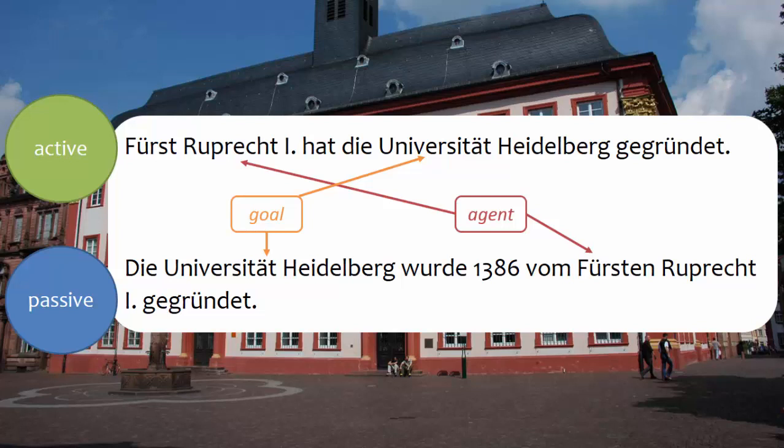In sentences in the passive, on the other hand, the goal is rendered as the subject and goes into the nominative. The agent is given in a prepositional phrase, as you see here. There is no direct object. Thinking in terms of agent and goal will help you see the relationships among nouns more clearly.